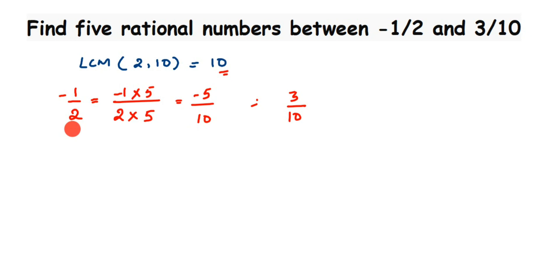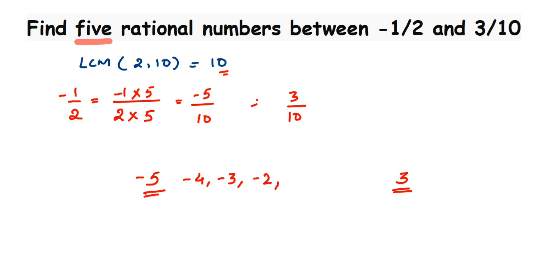So our two numbers are now -5/10 and 3/10. We need to find 5 rational numbers between them, which means between numerators -5 and 3 (excluding -5 and 3 themselves). The integers in between are: -4, -3, -2, -1, 0, 1, and 2 — that's 7 numbers. Since the question asks for only 5, we can pick any 5 of these.